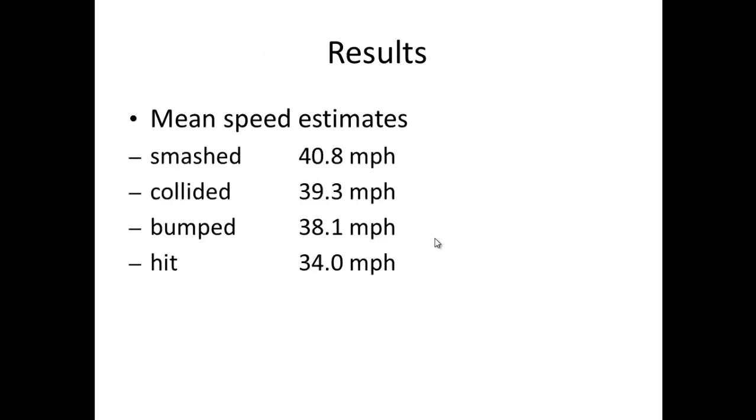So what were the results? Did it actually have an effect? Yes, it did. These are the mean speed estimates, depending on the verb. You can see smashed had the highest speed estimate at 40.8 miles per hour on average across all seven videos, whereas contacted, only 31.8 miles per hour. So there is quite a significant difference overall, and the bigger difference depends on the verb actually used.